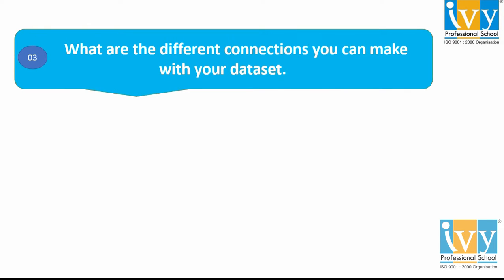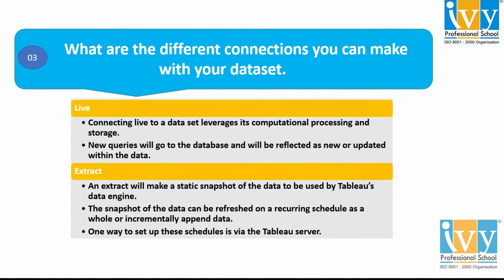What are the different connections you can make in your data set? Tableau mainly has two types of connections: live and extract. A live connection refers to a data source that contains a direct connection to underlying data, which provides real-time data, and when we connect to a data set live, we leverage its computational processing and storage. All new queries will go to the database and will be updated within the data.